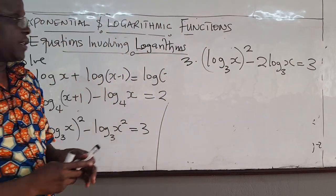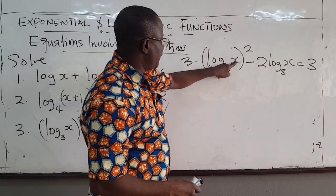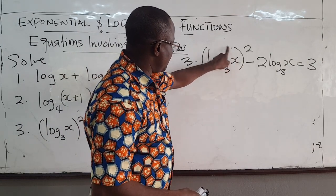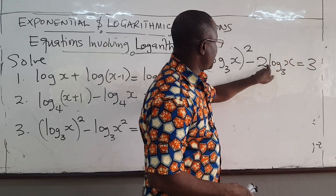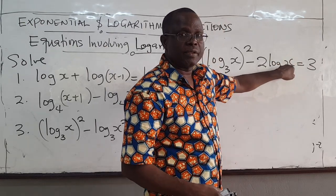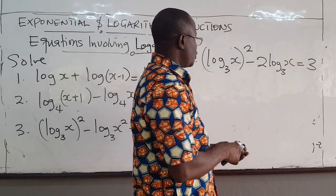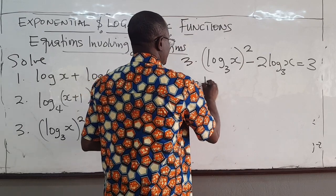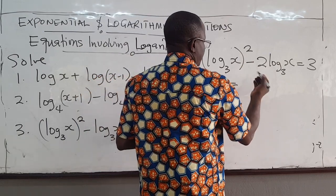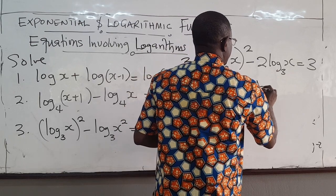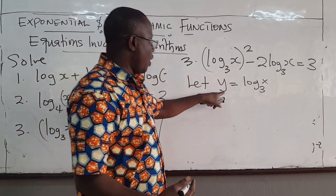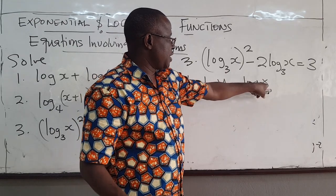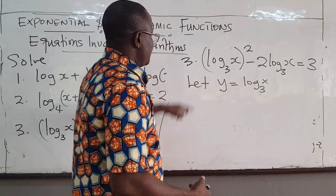Notice that this is a quadratic. I have the variable here, log base 3 of x squared. I have the same variable here and here, that is log base 3 of x. So what you do is, let y be equal to log base 3 of x, and then solve the quadratic for y. After that, you try to get x.